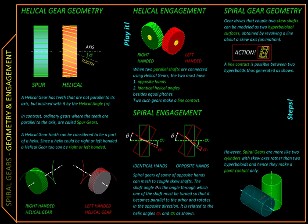So far we have seen that if we have two parallel shafts we can connect them using spur gears or helical gears, and if we have two intersecting shafts we can connect them using bevel gears. But what if we have two shafts which are neither intersecting nor parallel — in other words, what if they are skew shafts? In that case we will have to use what are called spiral gears.